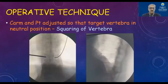The C-arm and patient are adjusted so that there is squaring of the vertebra. Squaring means the spinous processes are in the center, the pedicles are in the upper one-third of the body, the endplates are parallel in the AP view, and in the lateral view there is superimposition of the pedicles.